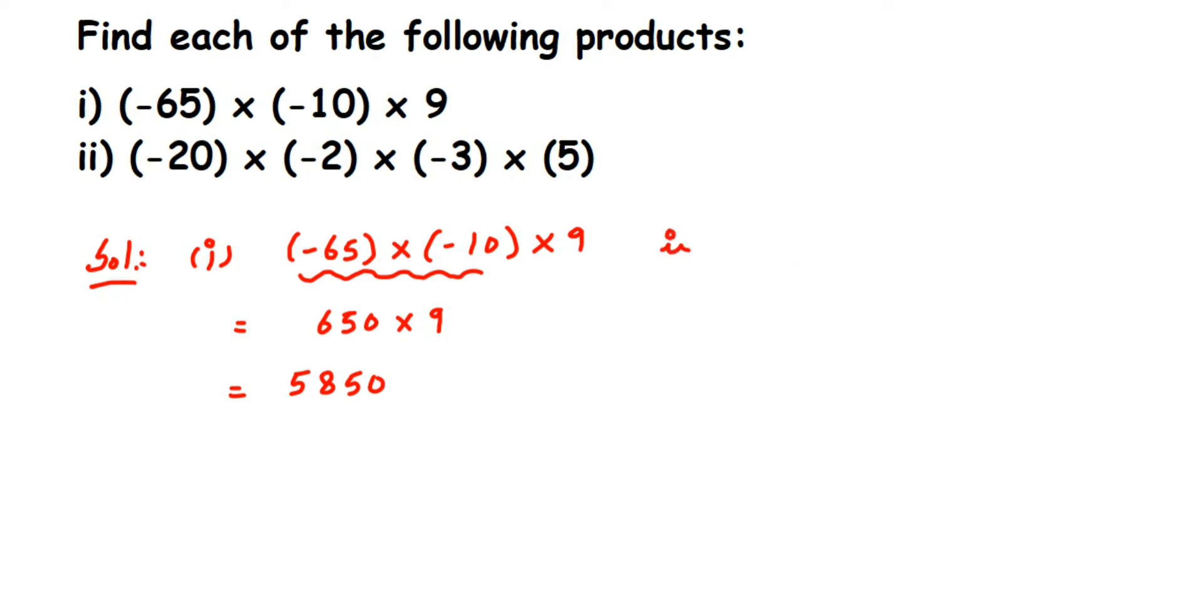In the second question we have (-20) × (-2) × (-3) × 5. Remember, like I said before, if you're multiplying negative numbers an odd number of times, you can see the second question has three negative signs. Three negative signs represent that your final answer will have a negative sign in it.